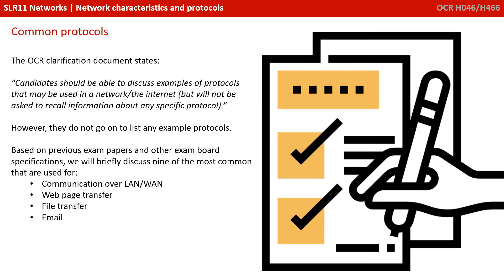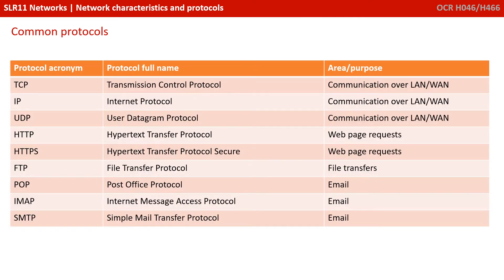The OCR Clarification Document states that candidates should be able to discuss examples of protocols that may be used in a network or the internet, but you're not actually going to be asked to recall information about a specific protocol. The exam board don't actually list an example of the sort of protocols they might expect you to know. However, based on previous exam papers and other exam board specifications, we're briefly going to discuss nine of the most common protocols used for communication, web page transfer, file transfer and email. A high-level awareness of these nine protocols should allow you to answer almost any question in the exam about this topic.